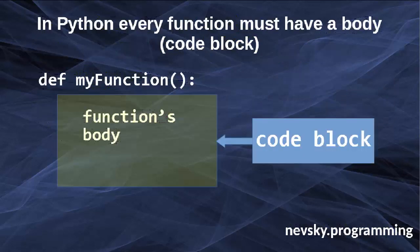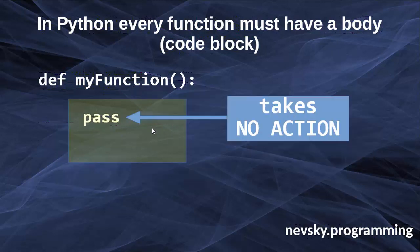In Python every function must have a body or code block. Here we're having a function called myFunction with some code block, but if we want to avoid writing this code block we can just use the pass statement which takes no action, so this means that this function currently does nothing.